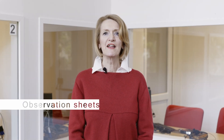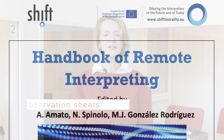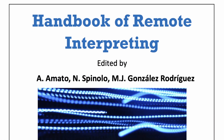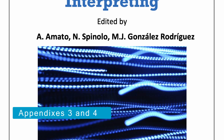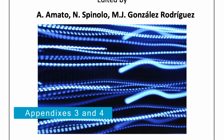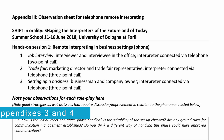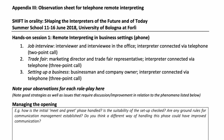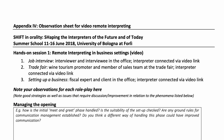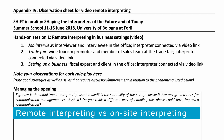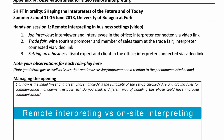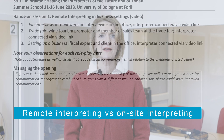In this last part, we will introduce the observation sheets that were developed within the framework of the Shifting Neurality project. They are to be found in the appendixes 3 and 4 of the handbook, one for telephone interpreting and one for video-based interpreting. As is well known, remote interpreting differs from on-site interpreting in many ways.